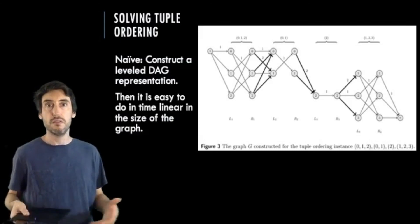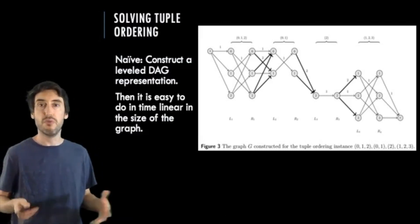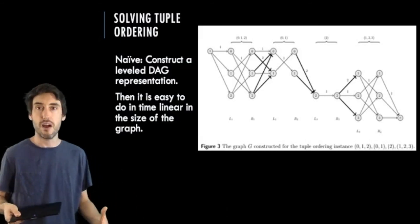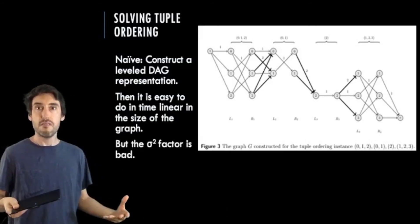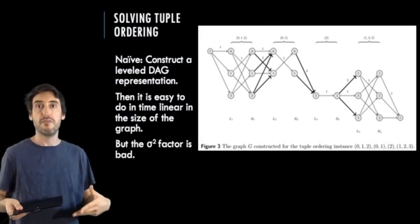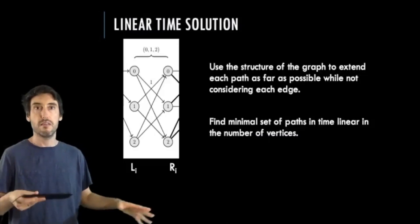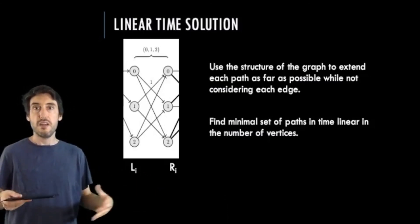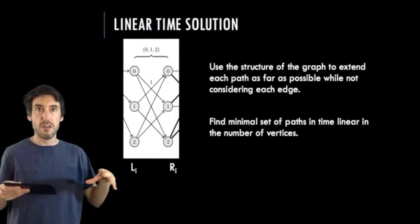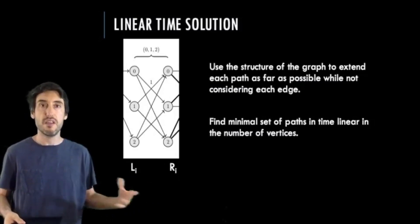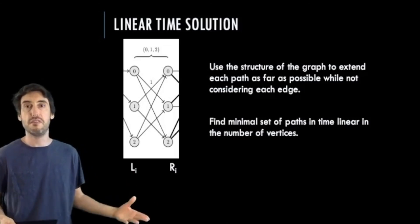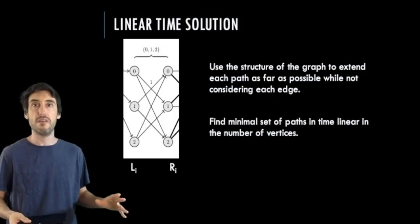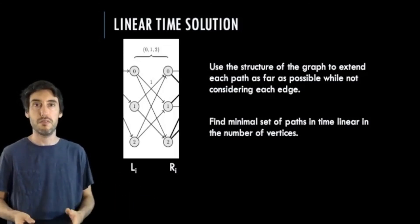So this representation works great, but unfortunately it's too big to construct explicitly and to solve in time linear in the size of the graph. So, hence, we need to use our knowledge of the graph to construct and extend the path from left to right. So, the idea is by doing this and understanding how the graph is constructed, we can instead do it in time linear in the number of vertices rather than the number of edges. So, the details of how to do this we'll leave to the paper since they're involved.